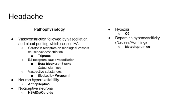When it comes to the pathophysiology of a headache, there are different mechanisms that can cause a headache. The first is that headaches can be caused by vasoconstriction followed by vasodilation and blood pooling. The blood pooling irritates the meningeal vessels and causes headaches. You can target this by constricting the blood vessels to prevent pooling. The meningeal vessels have serotonin receptors that cause vasoconstriction, so you can give a medication that acts on these serotonin receptors — like triptans — to relieve the headache.